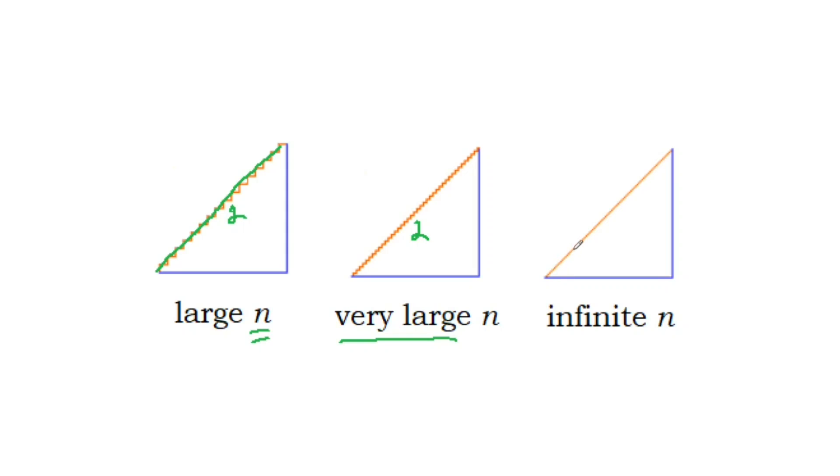The problem: all of these paths had length 2, but the diagonal now has length square root of 2. Hence, the paradox.